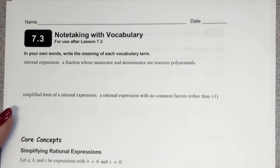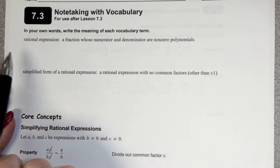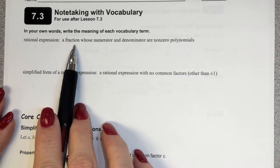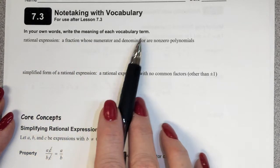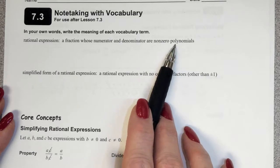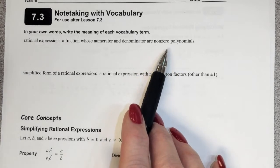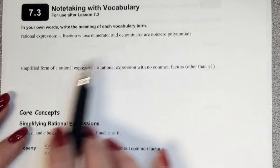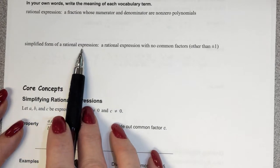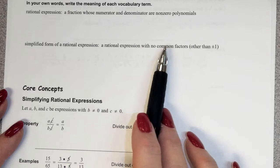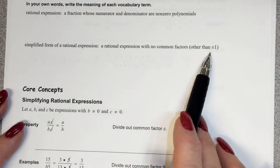Rational just means fraction. Whenever you see rational, we're talking about a fraction. In this case, the numerator and the denominator are going to be non-zero polynomials. Polynomials are things like x squared plus 4, x squared minus 3. A simplified form of a rational expression is one that has no common factors other than 1 or negative 1.